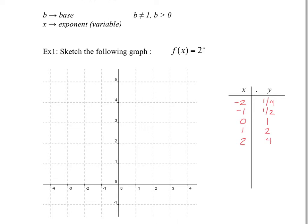Let's put our points down. At negative 2 you have 1 quarter, at negative 1 you have a half, at 0 you have 1, at 1 you have 2, and at 2 you have 4. Your graph looks something like this — let's sketch the line.